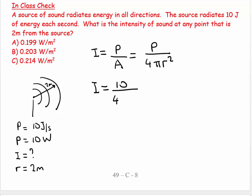If I put numbers into this, I see that's 10 watts divided by 4π times 2 squared, which equals 10 over 16π. So quickly go to my calculator: 10 divided by 16π, which is 0.199 watts per meter squared.